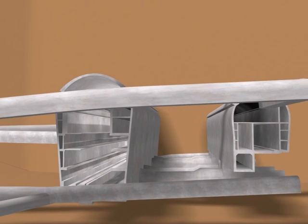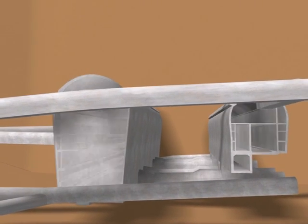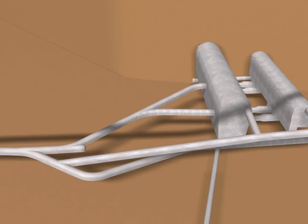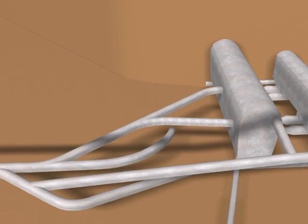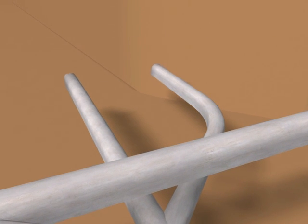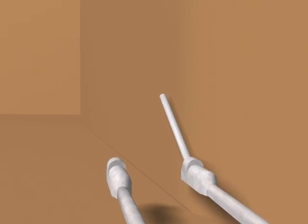Construction of the pressure shafts in the direction of Lake Mutt starts at the same time as the work on the galleries. Here too exploratory tunnels are built first. Then the pressure shafts are excavated one after the other using a tunnel boring machine.